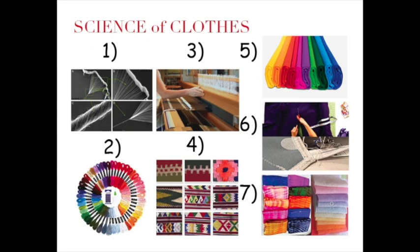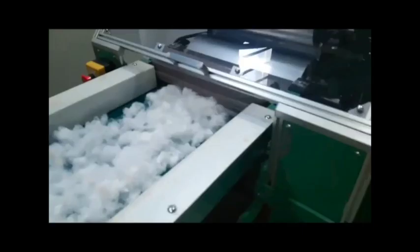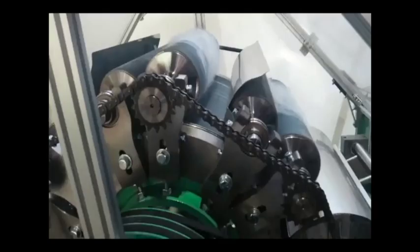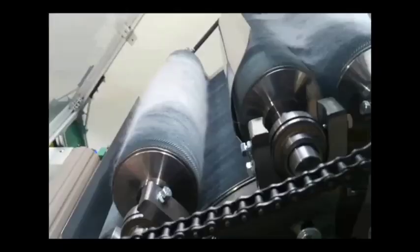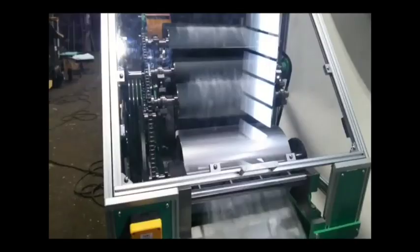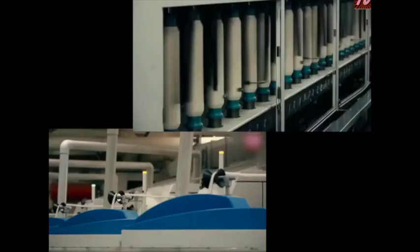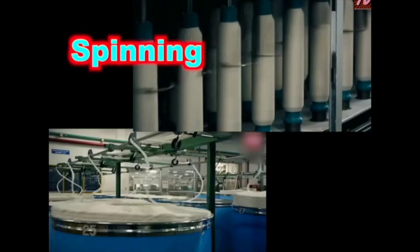Step 1: Twist Fibers. We start with fibers. Line up all the short fibers in the same direction. Twist the short fibers together to make long, strong threads.